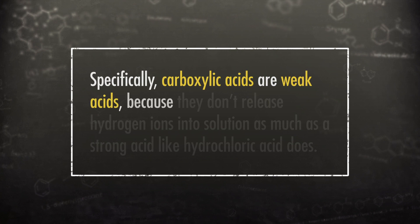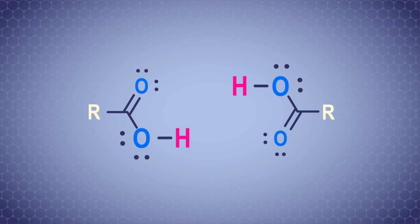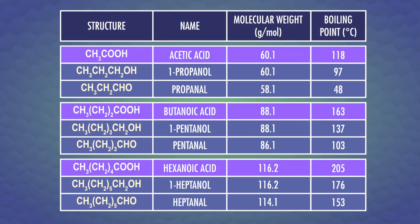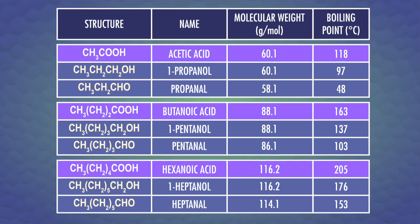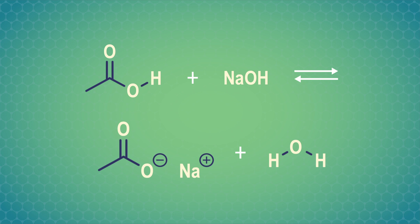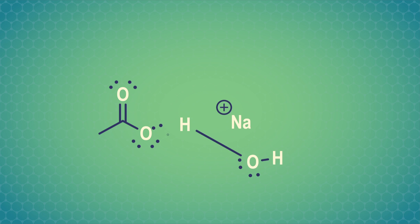As you'd expect from all these names, carboxylic acids are acidic. If they have about 4 carbons or fewer, they can dissolve in water. The hydrogen in the COOH part of the structure will be partially ionized, forming a hydrogen ion and leaving behind a carboxylate ion. Specifically, carboxylic acids are weak acids, because they don't release hydrogen ions into solution as much as a strong acid like hydrochloric acid does. The COOH part allows intermolecular hydrogen bonds to form between two acid molecules or an acid in water, so carboxylic acids have high boiling points, and all those with fewer than 10 carbons in a straight chain are liquids at room temperature. We can react shorter-chain carboxylic acids with sodium or potassium hydroxide to form water-soluble salts. The hydroxide ion grabs the proton from the carboxylic acid group, forming water and leaving a carboxylate ion behind.